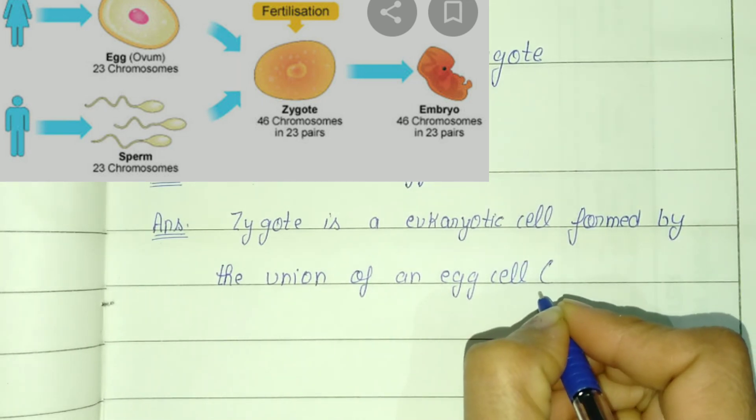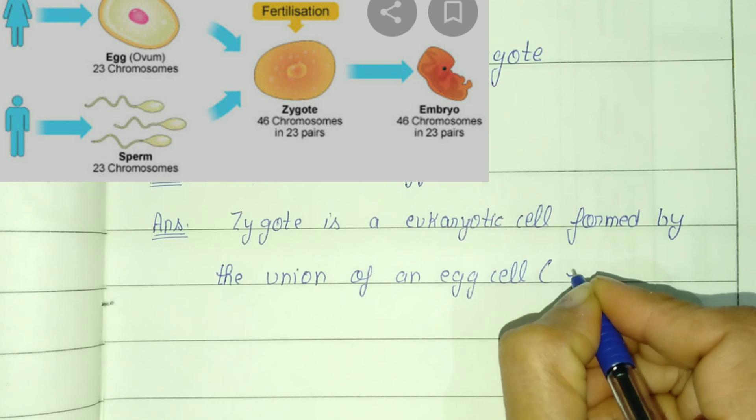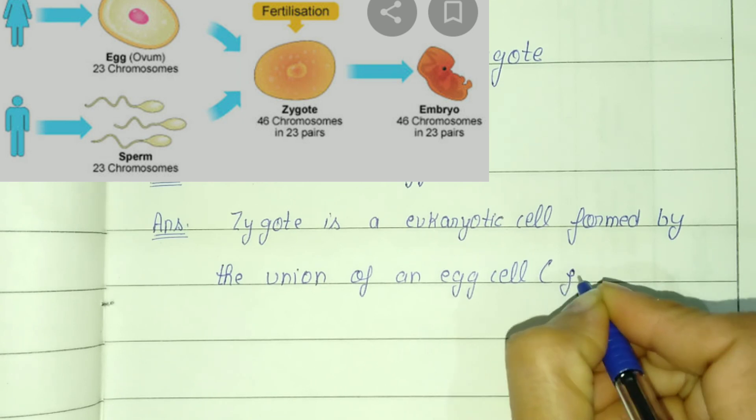Egg cell is formed in the female body, so we can say egg cell is the female gamete.